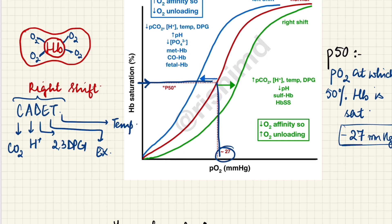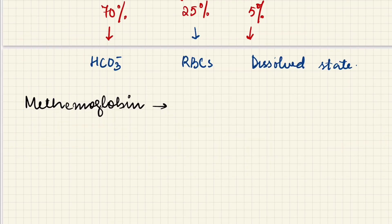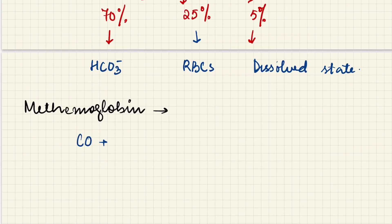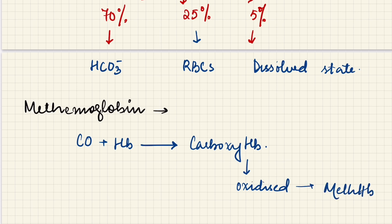Also, what is methemoglobin? When carbon monoxide attaches to hemoglobin, it forms carboxyhemoglobin. The hemoglobin here is oxidized and this hemoglobin is known as methemoglobin. It is a very stable compound because carbon monoxide has very high affinity to hemoglobin—more than oxygen, 200-300 times more than oxygen.